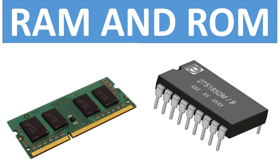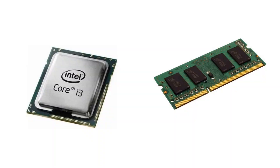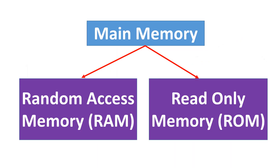RAM and ROM. Main memory is directly accessed by the CPU to store and retrieve data. Different kinds of main memory are random access memory and read-only memory.